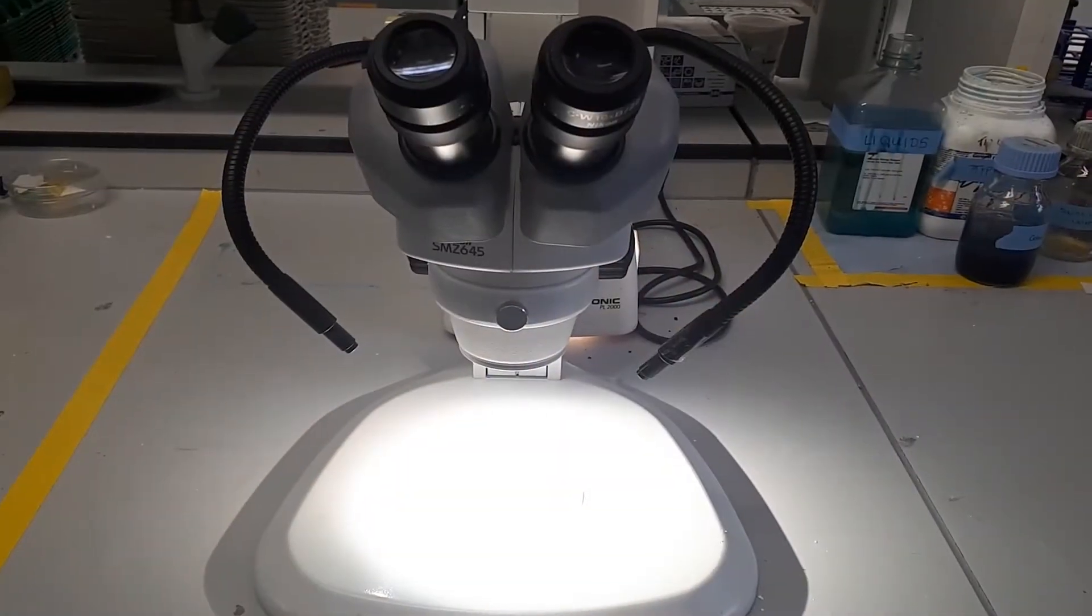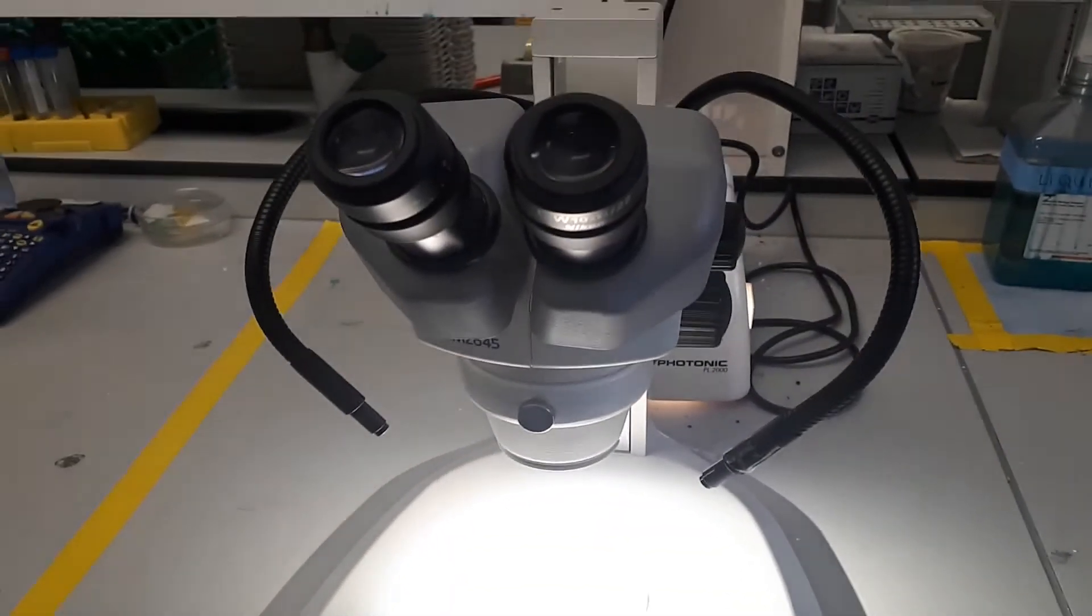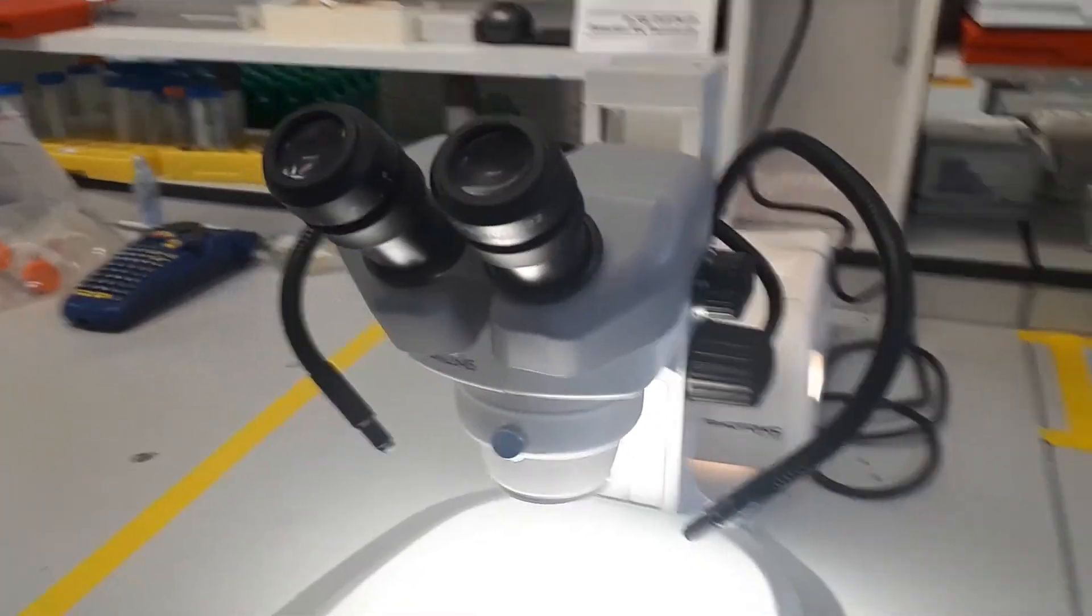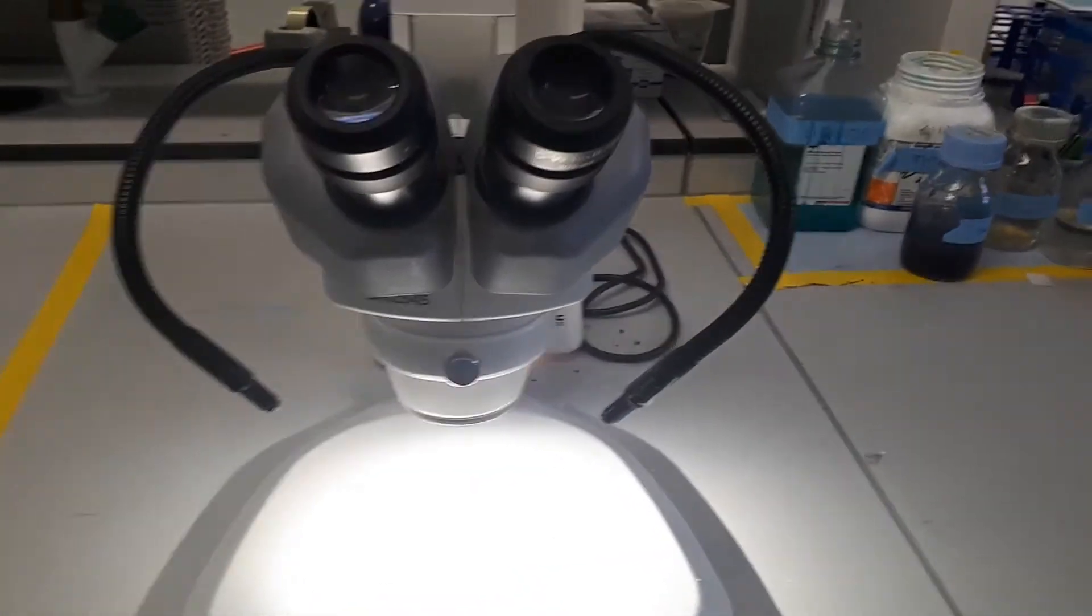Have you heard of a microscope before? Do you know what it does? Let's have a look at one. So we use microscopes to zoom in on things which are really, really small. If we look down this part, which is called an eyepiece, we can zoom in really close.